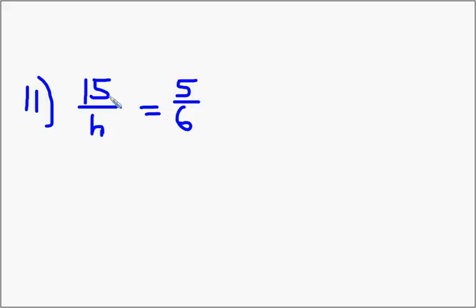So what we could do is multiply 15 times 6, and that's 90. And that should equal 5 times h. Once again, I'm just taking numerator. 15 times 6 is 90. 5 times h is 5h.